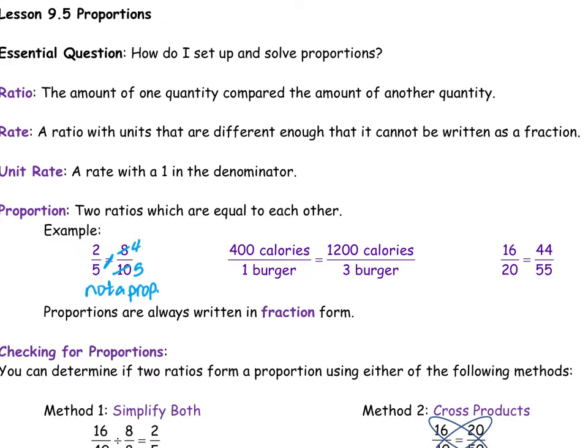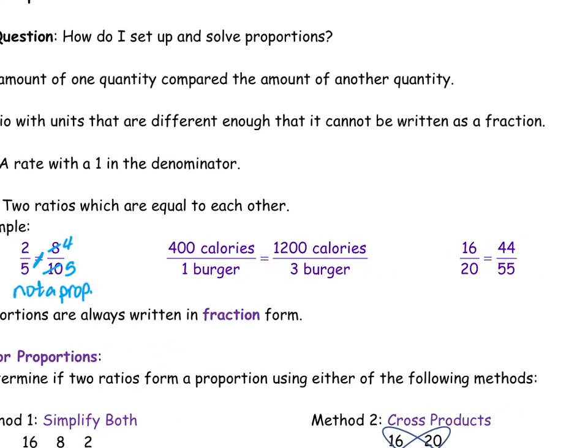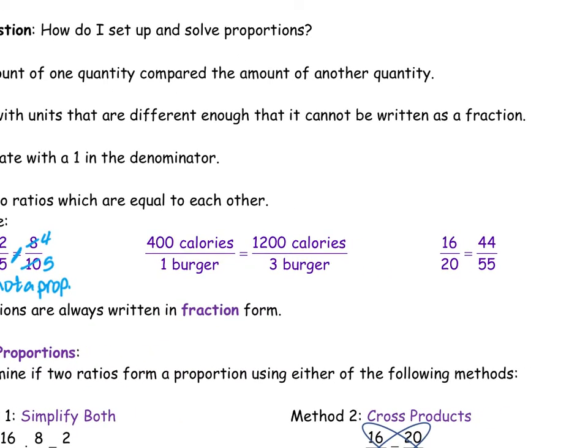If we look at the next one, 400 calories per one burger, and then I simplify the 1,200 calories over 3 burgers. They're both divisible by 3. 1,200 divided by 3 is 400, and 3 divided by 3 is 1. So this is a proportion.